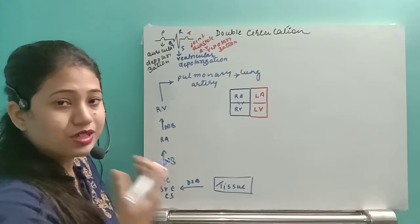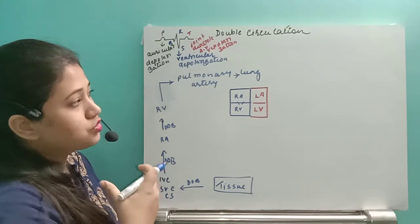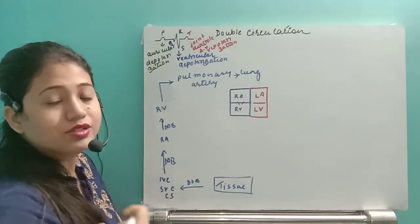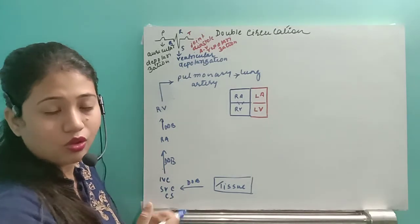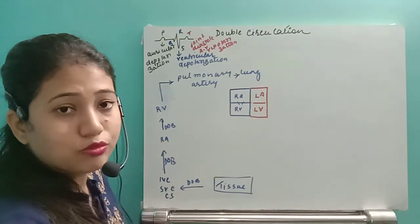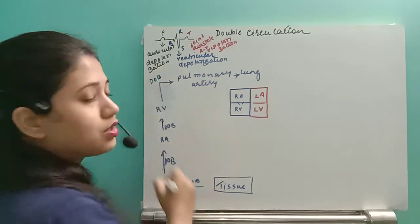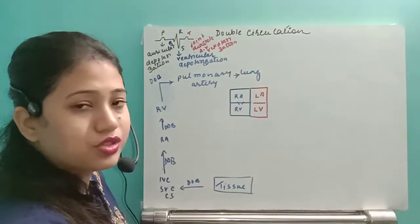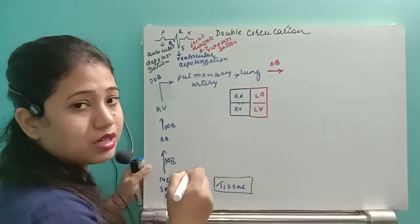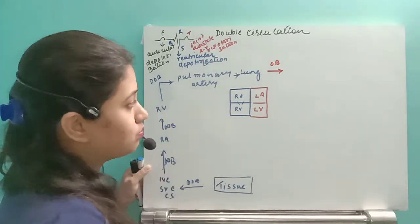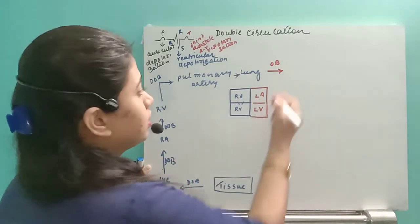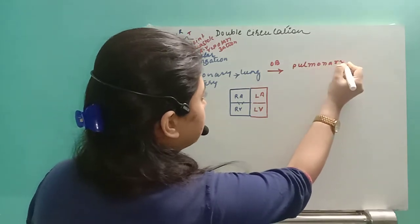The pulmonary artery carries deoxygenated blood to the lungs. During inspiration, the lungs take in oxygen — that oxygen goes to the blood and carbon dioxide is released. Exchange of gases occurs in the lung. The deoxygenated blood arriving via the pulmonary artery gets oxygenated in the lungs. This oxygenated blood then comes to the left atrium by means of the pulmonary veins.